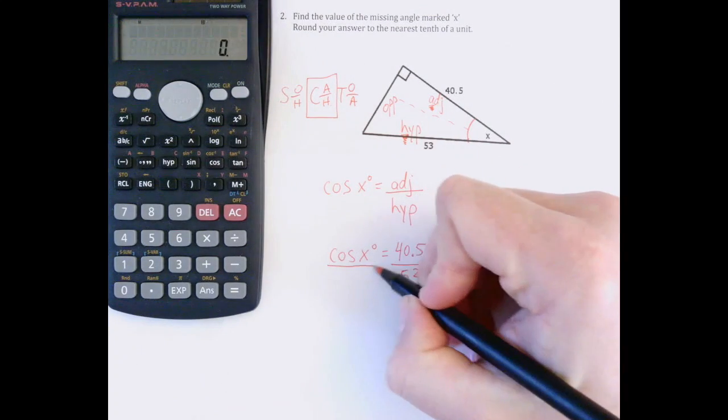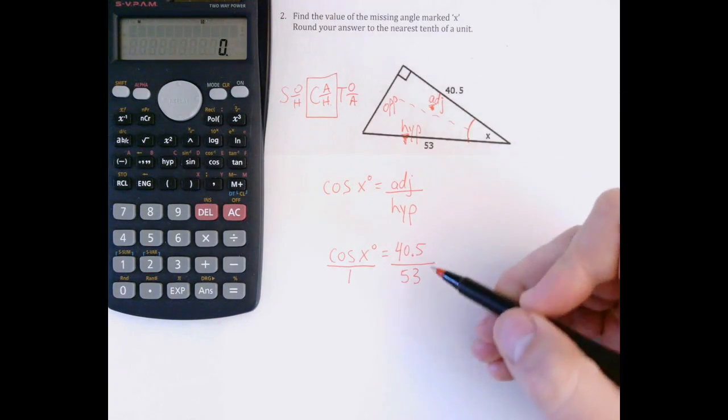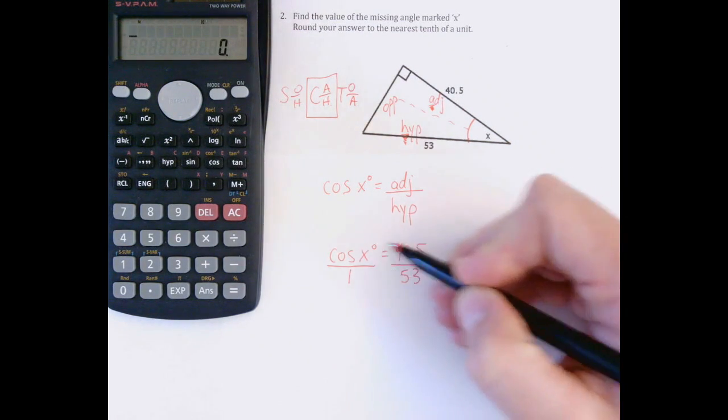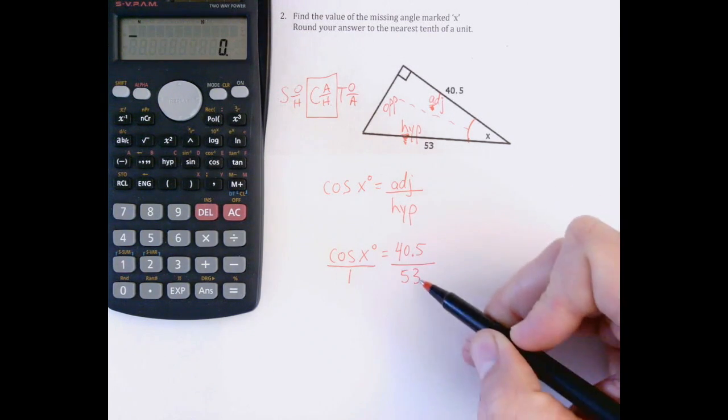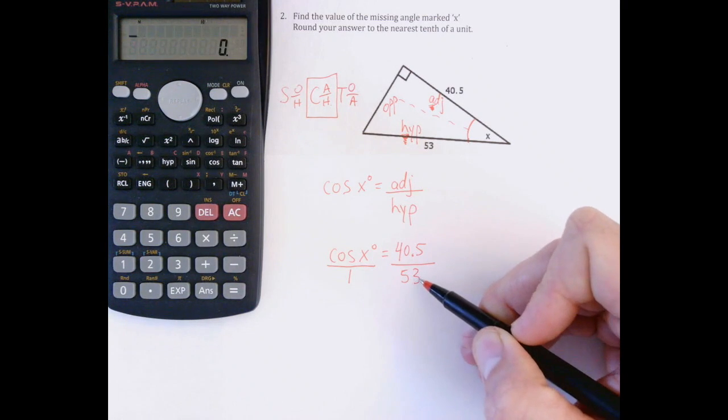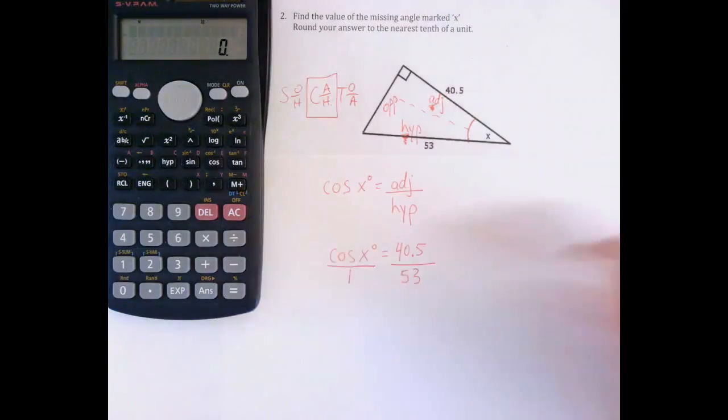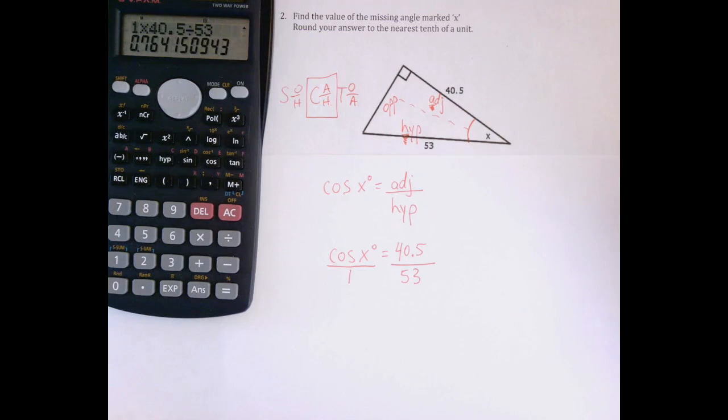Now to solve this, the easiest way is to put this over one and create equivalent fractions. Not really necessary here because we could just divide, but it's good to get in the habit. So I'm going to multiply my diagonals and divide by my other value, that's the rule for cross-multiplying. So 1 times 40.5 divided by 53. That equals 0.764150943.